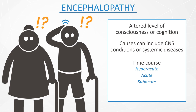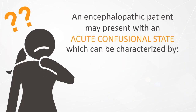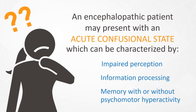Acute encephalopathy is often reversible once the underlying etiology is determined and treated. An encephalopathic patient may present with acute confusional state, impaired perception, information processing, and memory, with or without psychomotor hyperactivity.